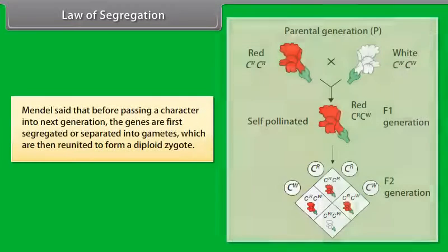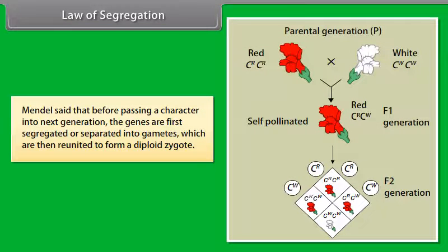Law of Segregation. Mendel said that before passing a character into the next generation, the genes are first segregated or separated into gametes, which are then reunited to form a diploid zygote.